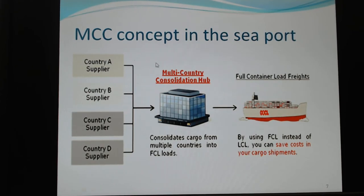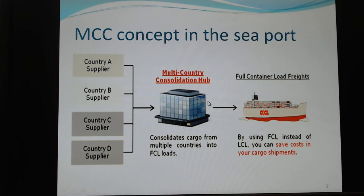Here is the MCC concept — a very simple method to understand. You can import cargo from suppliers A, B, C, D — different suppliers — and use this place, meaning a logistics center or warehouse, to do this kind of consolidation. Then the packages become one 20-foot or 40-foot big box. Twenty-foot means small LCL boxes consolidated together to become full, meaning FCL — full container load freight — and used by the carrier to transport to your destination. So you can reduce your cost, especially in cargo transshipment.